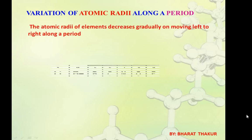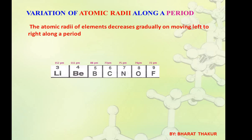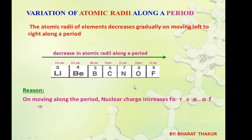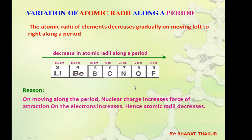For periods, on moving left to right, the atomic size decreases. For example, from Lithium to Fluorine in period 2, atomic size of Lithium is 152 pm and for Fluorine it is 72 pm. The reason: on moving left to right along the period, nuclear charge increases. So the force of attraction on the outermost electrons increases, they are attracted more towards the nucleus, and hence the atomic radius decreases.